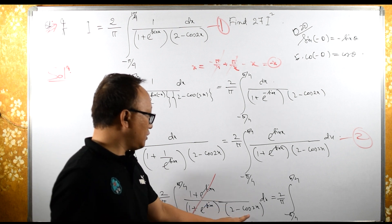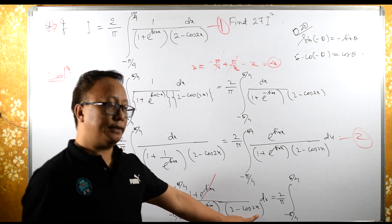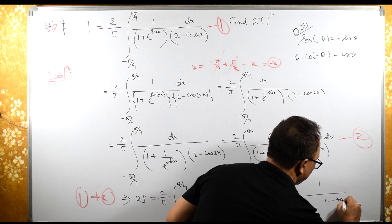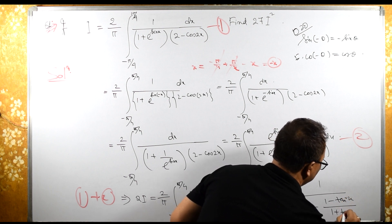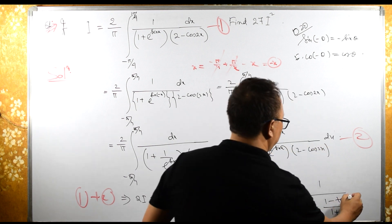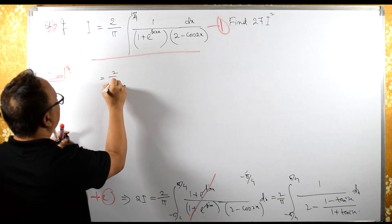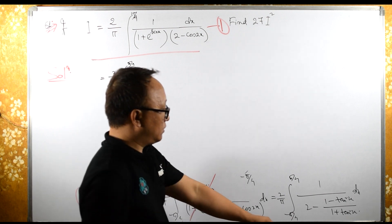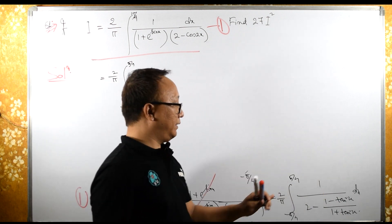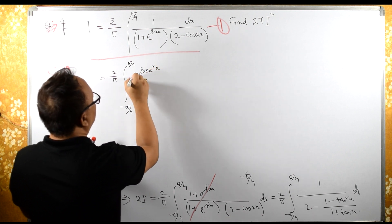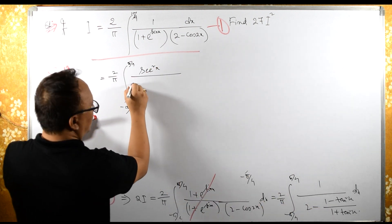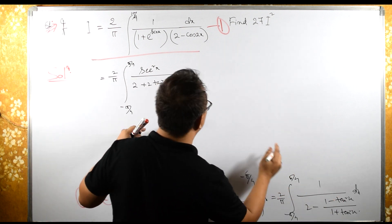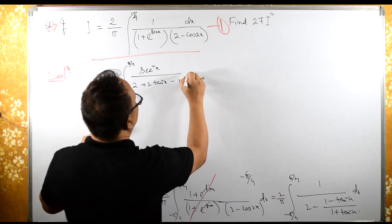So we have 2 by pi integral from minus pi by 4 to pi by 4 of 2 minus cos 2x dx. Instead of cos 2x we can write 1 minus tan squared x upon 1 plus tan squared x. Taking LCM we get 1 plus tan squared x in the denominator, and the numerator becomes 2 plus 2 tan squared x minus 1 plus tan squared x, giving us 1 plus 3 tan squared x over 1 plus tan squared x dx.